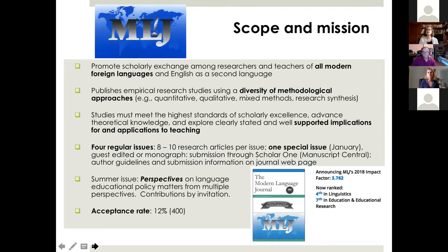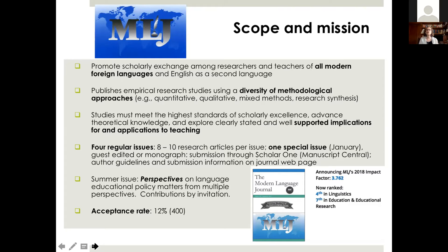The two criteria of importance for us are that studies must support clear and important implications and applications to language learning and teaching, and that they have a high standard of scholarly excellence in terms of methodological rigor and theoretical implications. We publish four regular issues and also a special issue in January, and typically publish two special issues per year. We receive over 400 submissions per year and our acceptance rate has been consistently around 12%. Our 2018 impact factor was 3.7, ranked fourth in linguistics journals and seventh in education and educational research.